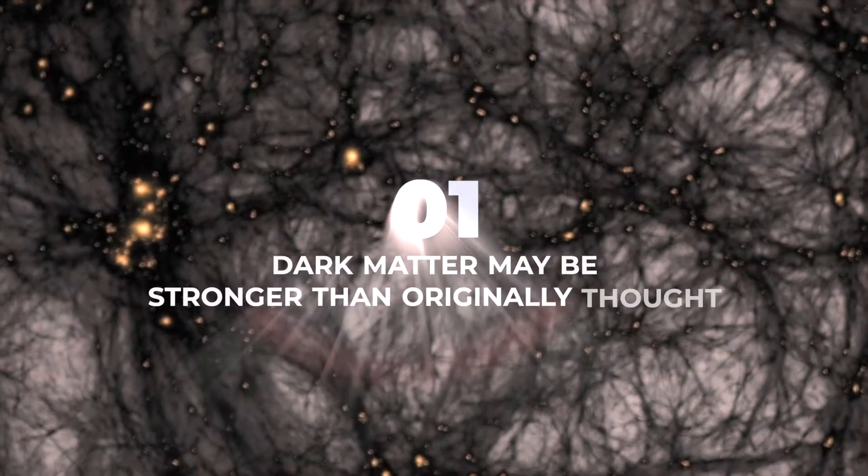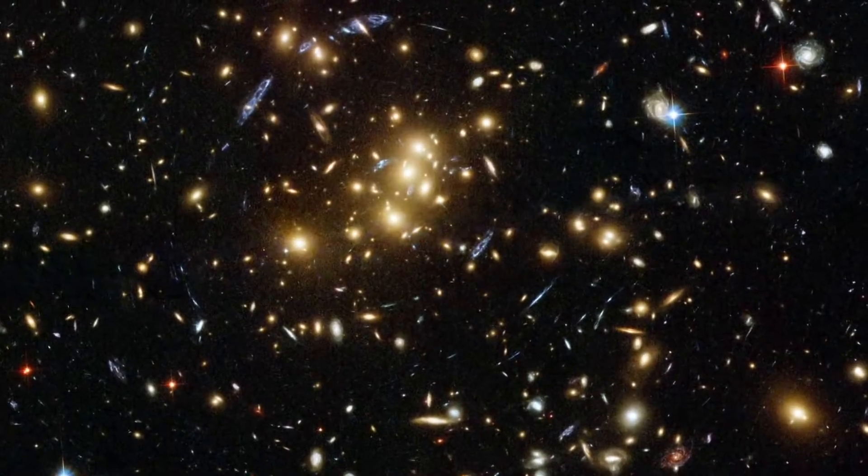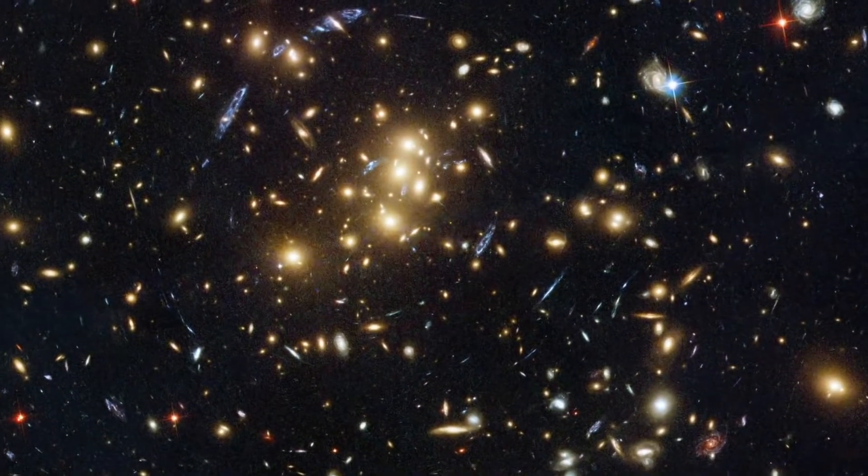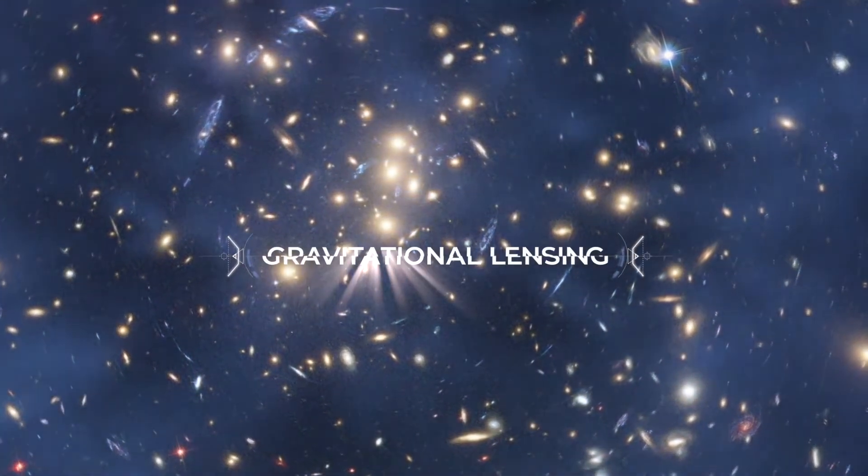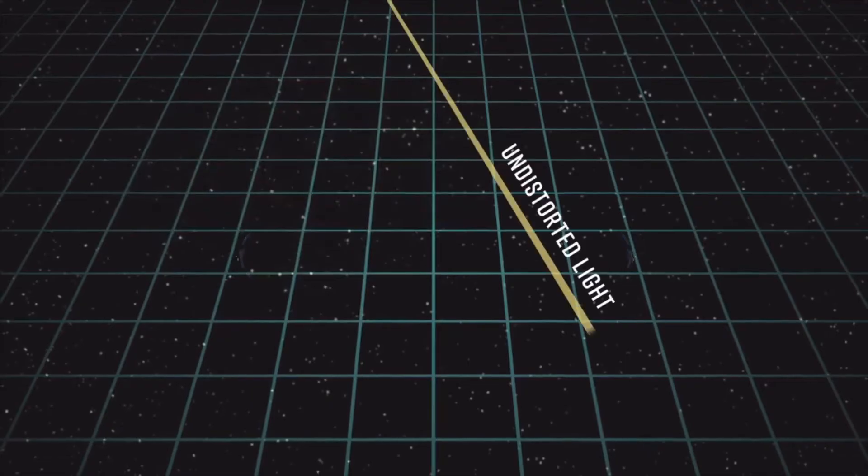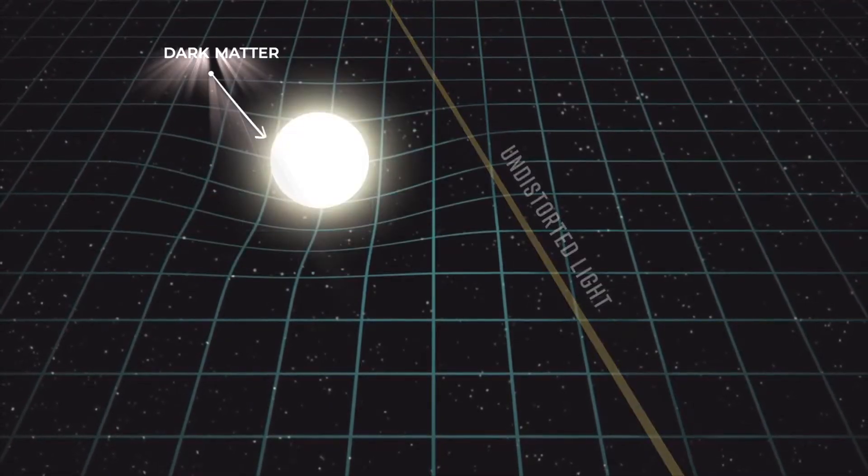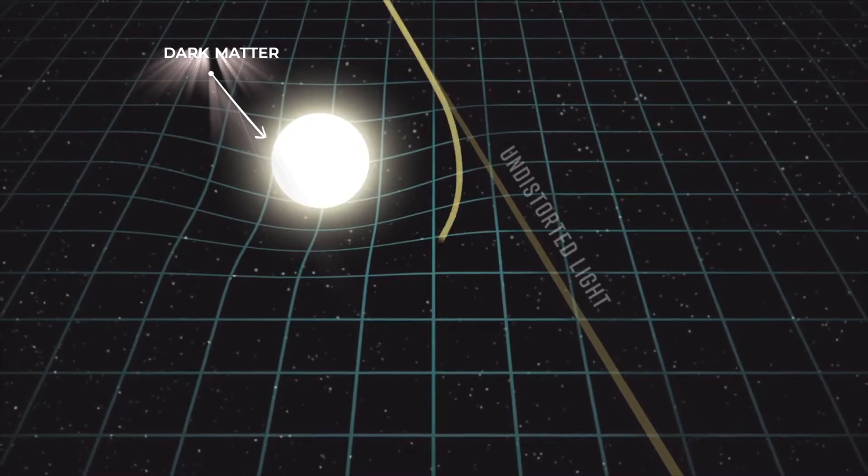Number 1. Is dark matter stronger than the current models predict? New images from the Hubble Space Telescope showed the light from distant galaxies having much more gravitational lensing than theory says there should be. Gravitational lensing is the phenomenon in which light from distant space becomes bent in arcs and circles as it passes through large clusters of dark matter.